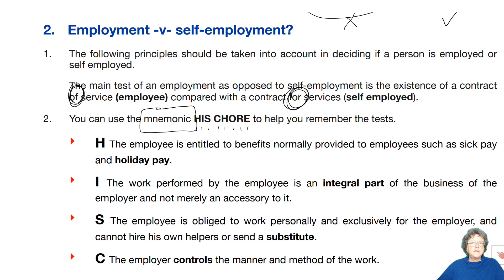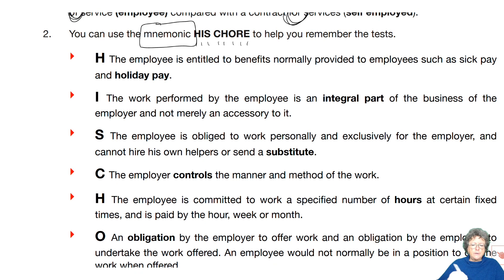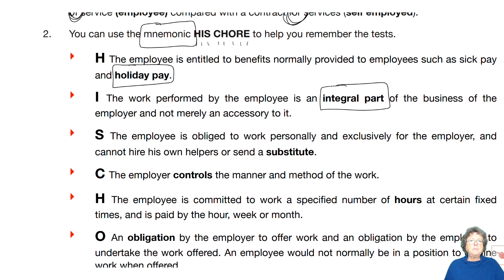The mnemonic HIS CHORE helps you remember the employment indicators. An individual who is employed gets benefits such as sick pay, holiday pay, and maternity pay. H is for holiday pay. I — are they an integral part of the business and not merely an accessory to it? An employee would be there every single day, whereas somebody who comes in to do plastering or plumbing is not integral — they would be self-employed.